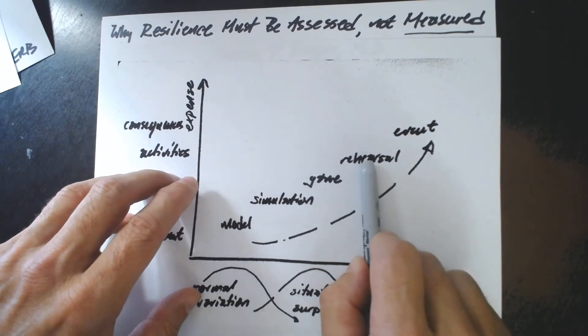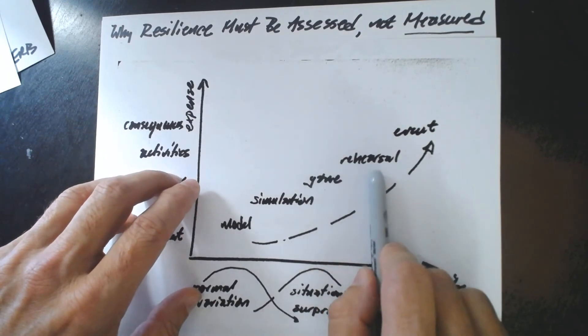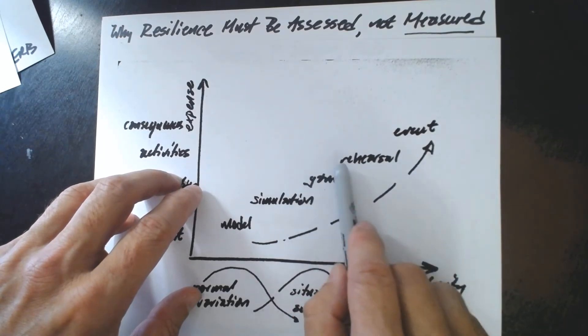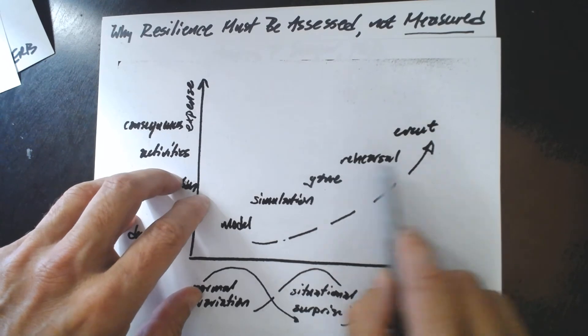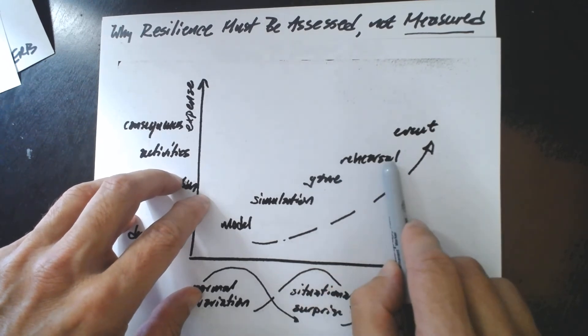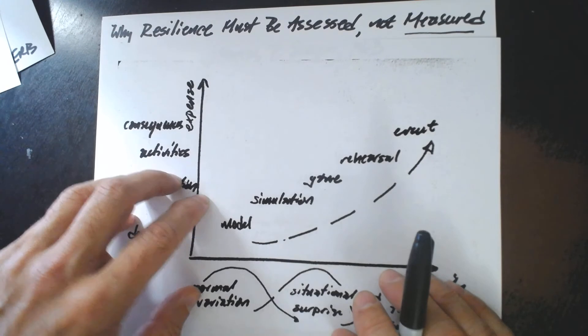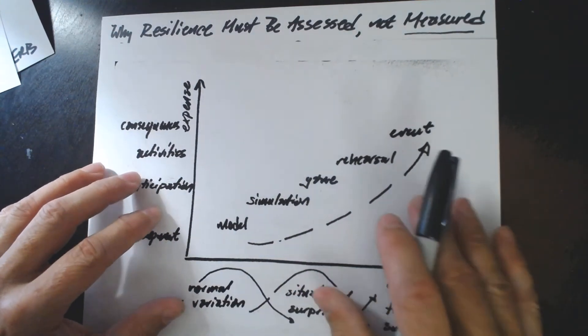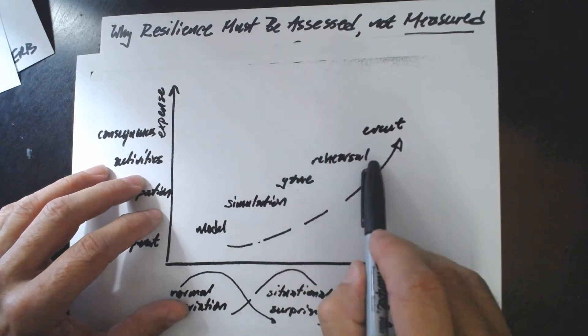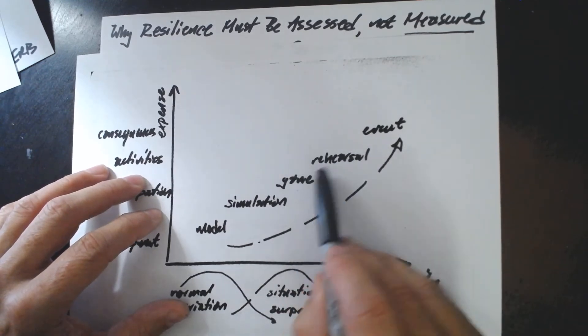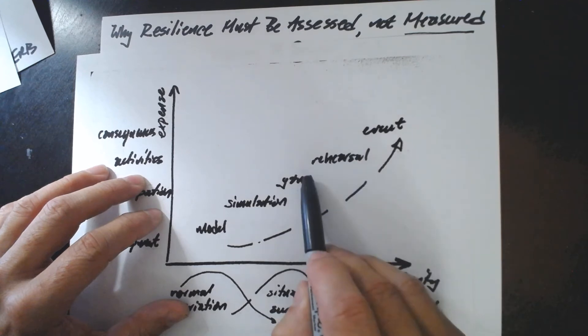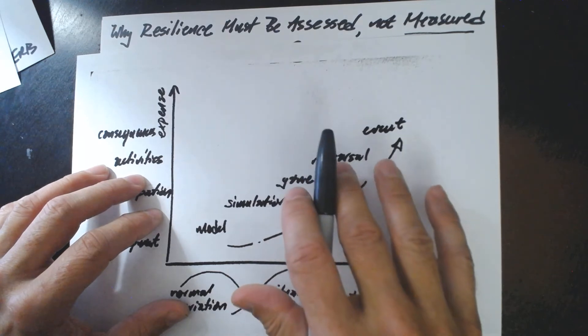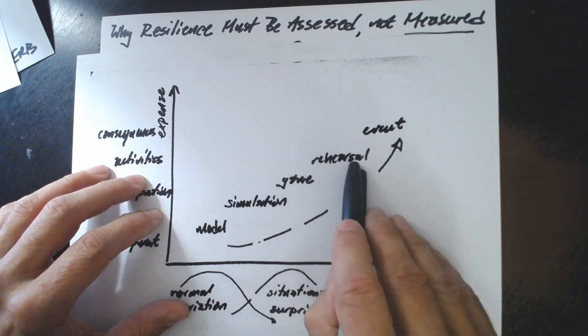So when we're trying to assess resilience, when we're trying to observe the verbs, so far we have the model that sort of runs by itself. We have the simulation in which people are interacting with the model. And we have the game in which people have an incentive structure or a motivation or an emotional component that adds the additional complexity. Finally, we get to a rehearsal. And a rehearsal, it still could be in the context of the game or the simulation. But the rehearsal typically happens in a live, full-scale event.